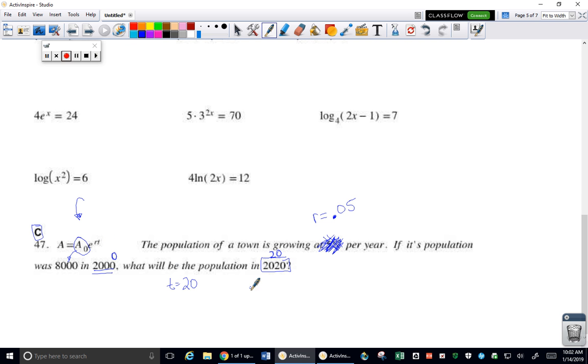So we go right into this formula. 8,000 to start. E to the .05 growth rate times the 20-year period.